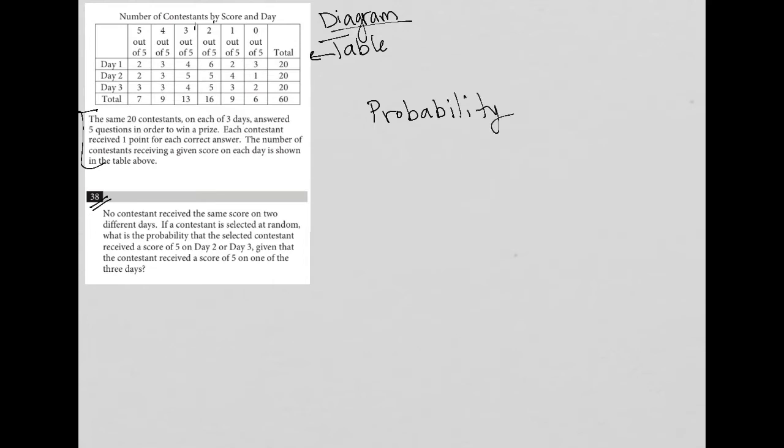We're specifically being asked for the probability of something happening on day 2 or day 3. When it comes to probability on the SAT, something to make note of is a probability is always going to be a fraction. The numerator to that fraction will always be what you want. So, I'll just write that down, what you want.